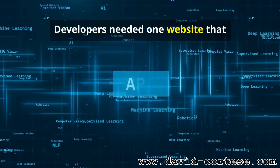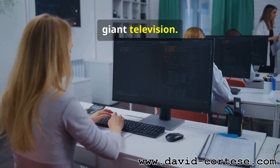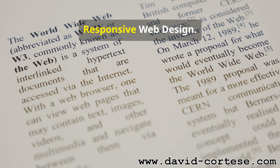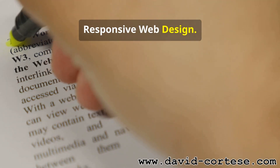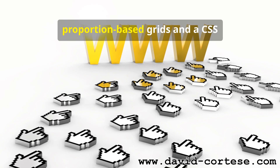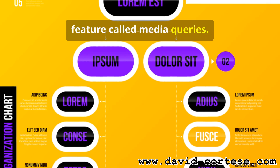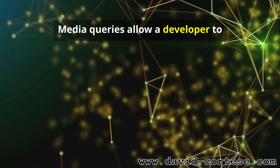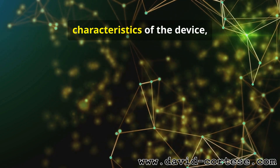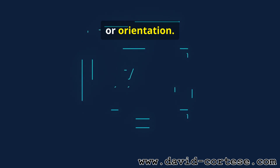Developers needed one website that worked on any screen, from a tiny phone to a giant television. The answer was an approach called responsive web design. The idea was to use flexible, proportion-based grids and a CSS feature called media queries — which allow a developer to apply different CSS rules based on the characteristics of the device, such as its width, height, or orientation.